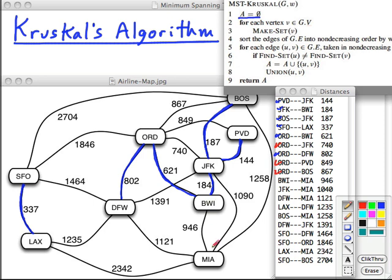BWI MIA. We got a new one here growing in this big east coast set here. JFK MIA, that's redundant. DFW MIA, that's already in the same set.